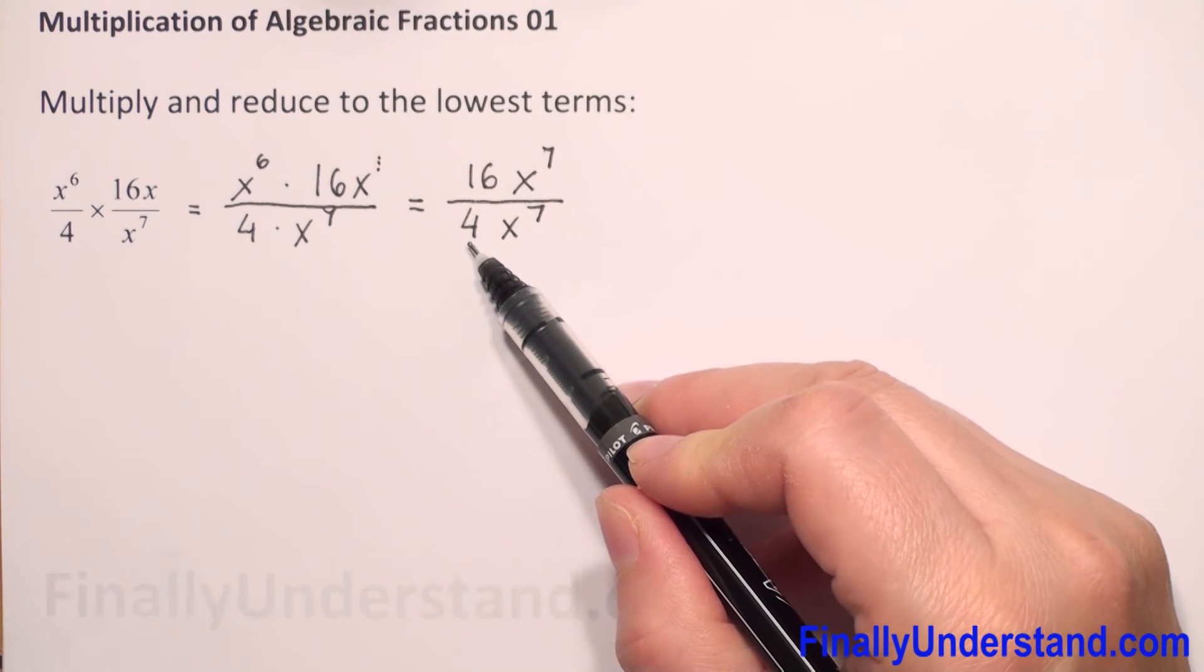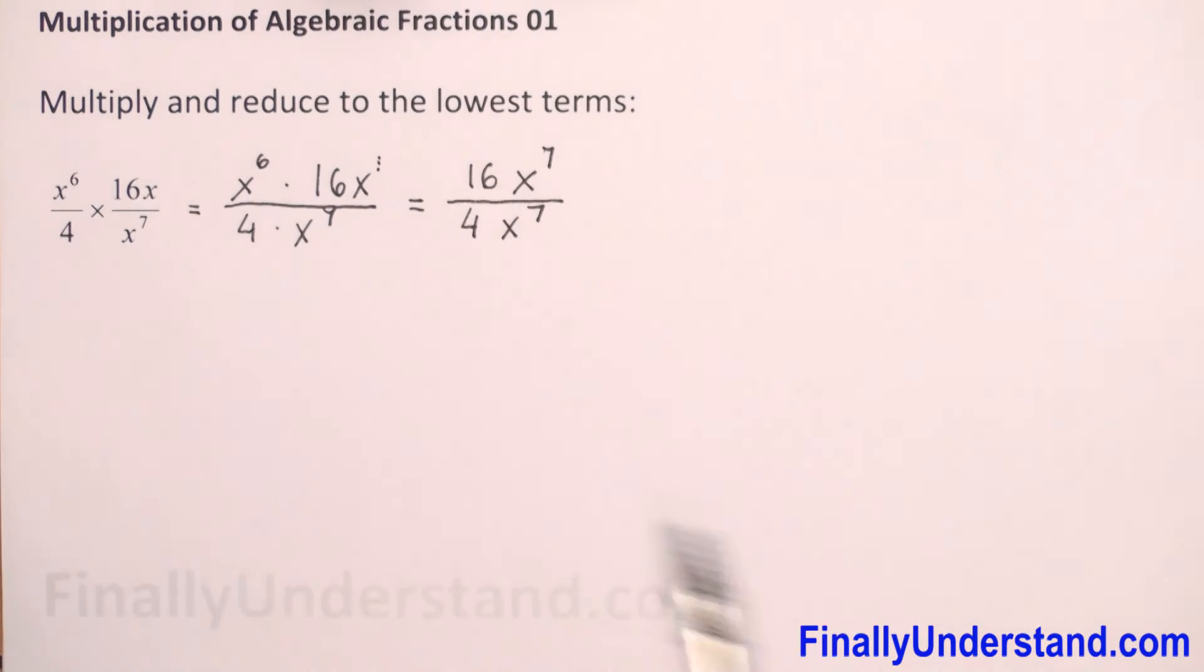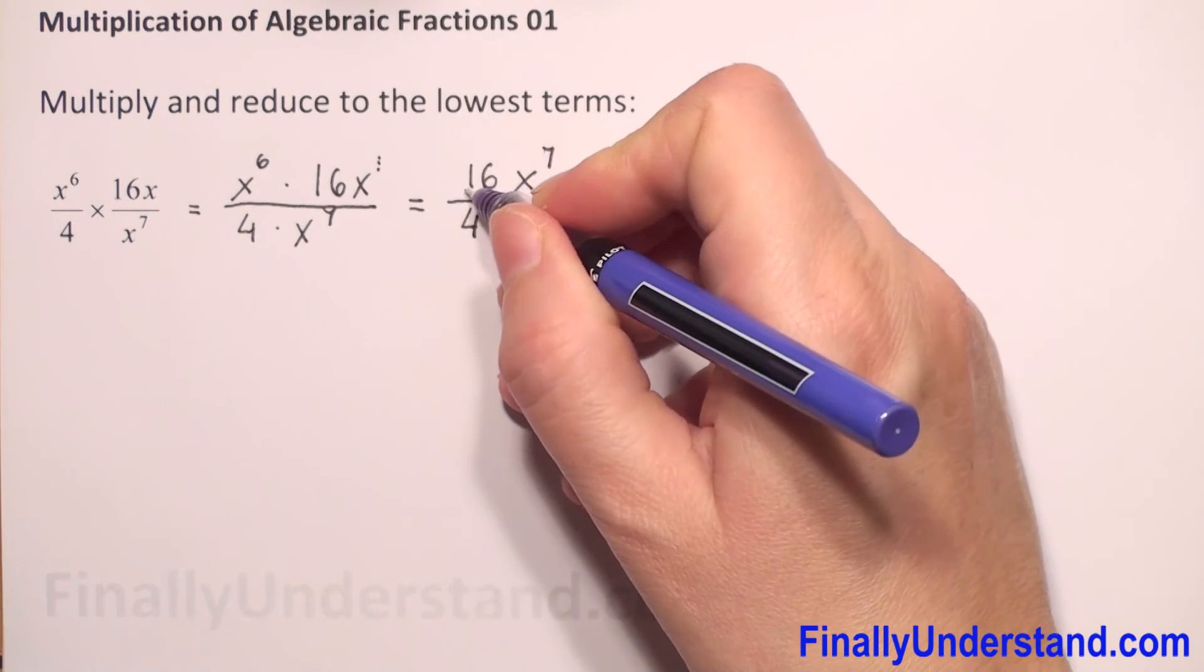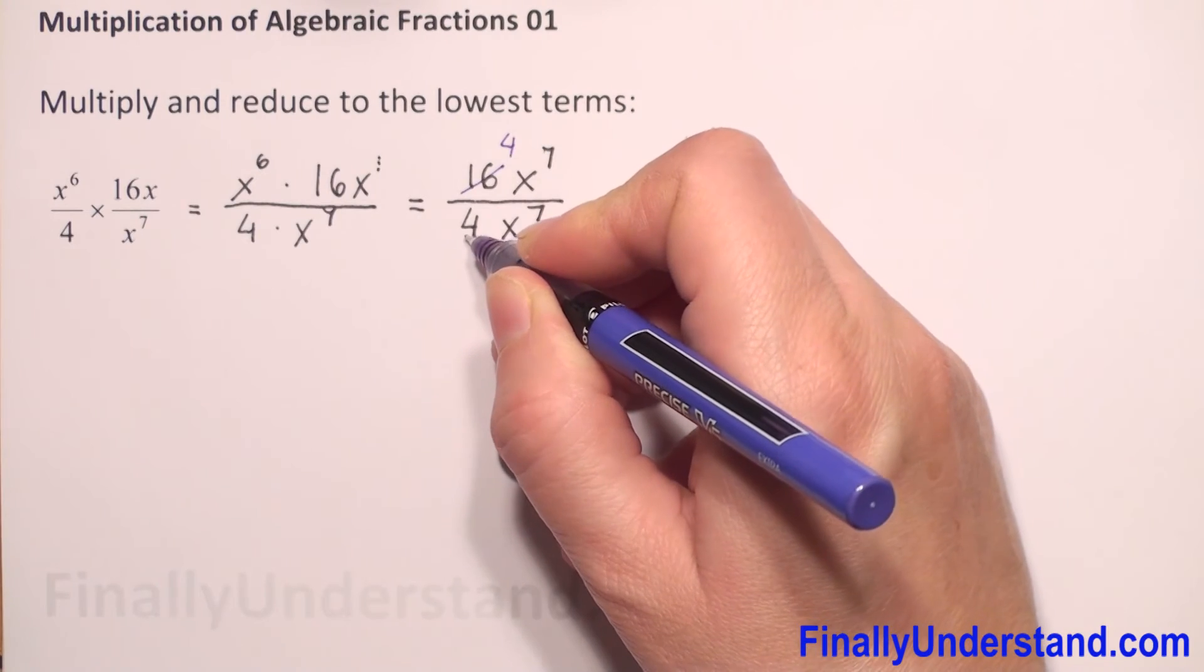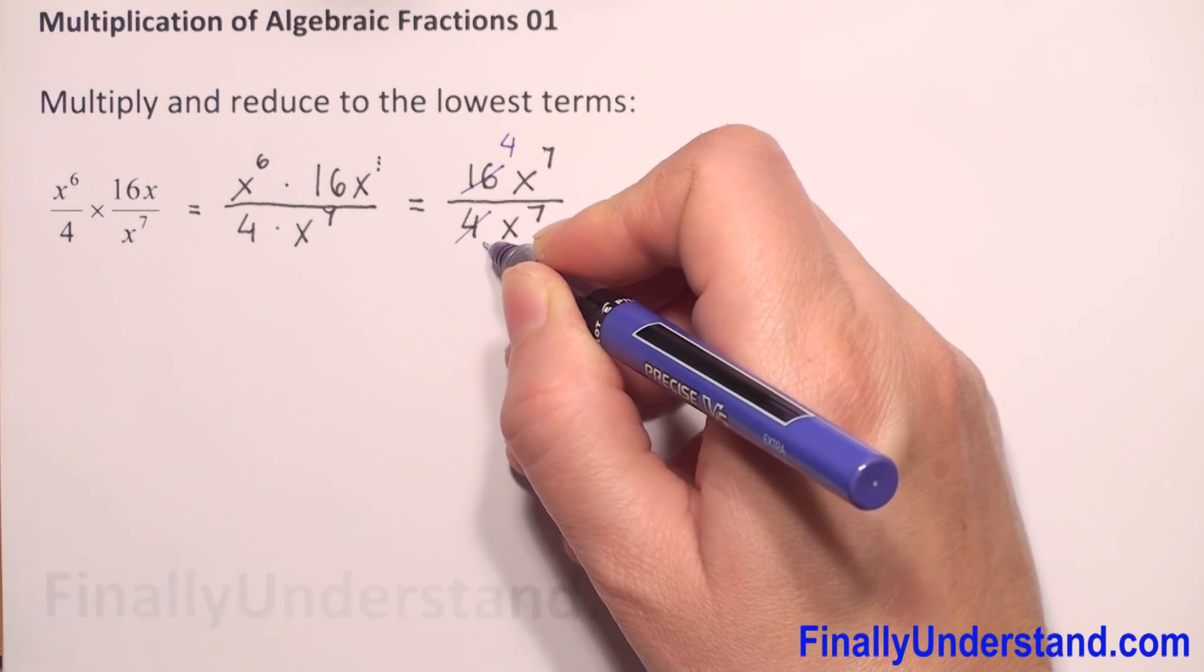We have 16 and 4. The greatest common factor for 16 and 4 is 4. So 16 divided by 4 is 4, and 4 divided by 4 is 1.